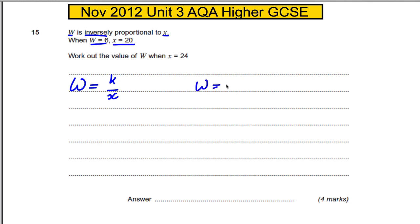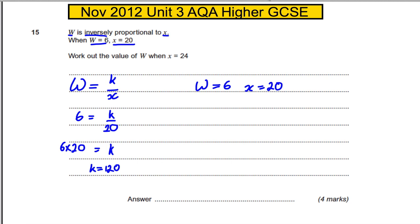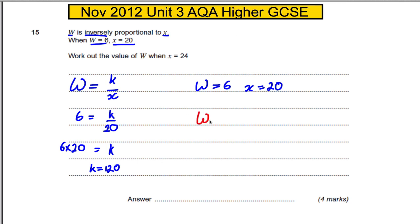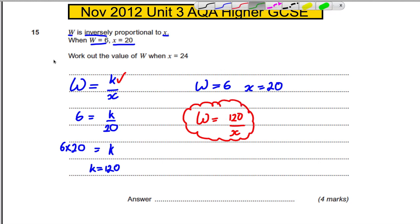Substituting those in — W is 6, X is 20 — we can work out K. So 6 must be K over 20, which means K must be 6 times 20, so K must be 120. Therefore we can write our formula: W equals 120 over X. This is the formula we can use henceforth.